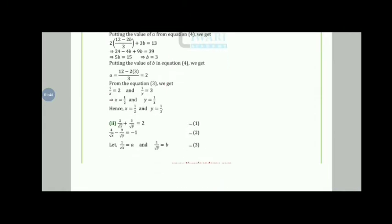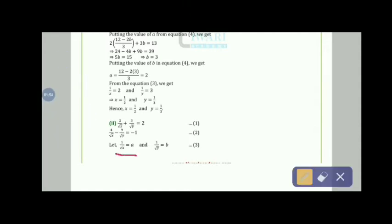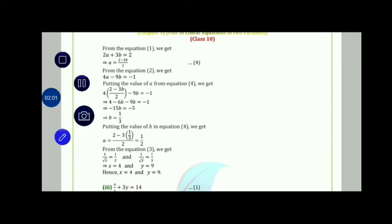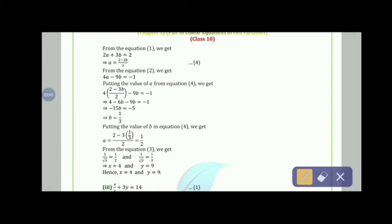Moving to the second part: 2/√x + 3/√y = 2 and 4/√x − 9/√y = −1. We let 1/√x = a and 1/√y = b. From equation 1 we get 2a + 3b = 2, so a = (2 − 3b)/2.